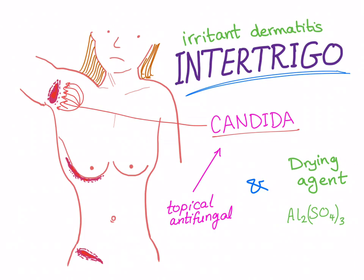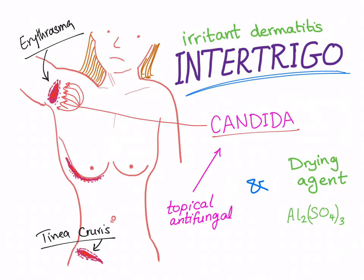You must rule out two conditions first: erythrasma in the axilla, and tinea cruris in the groin. Erythrasma is ruled out using a Wood's lamp, and tinea cruris — a dermatophyte infection — is ruled out using a KOH mount (potassium hydroxide preparation).